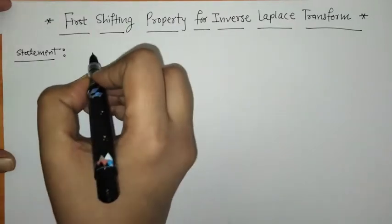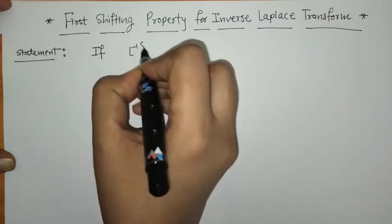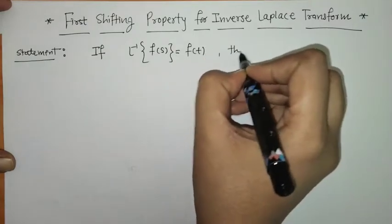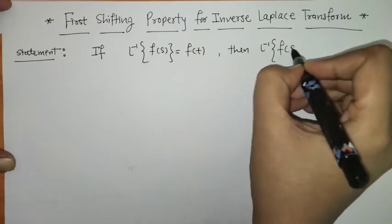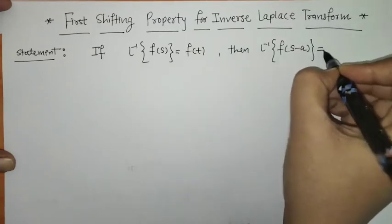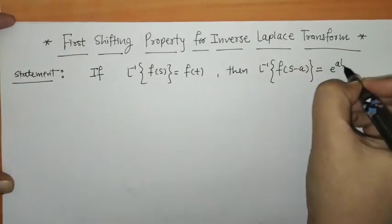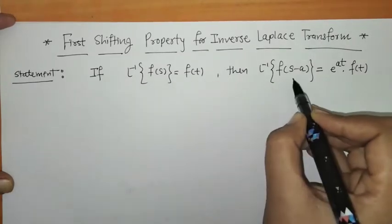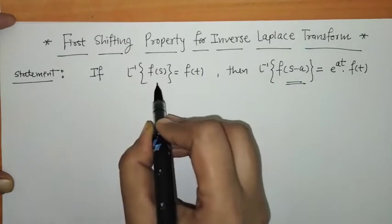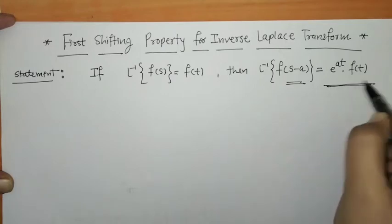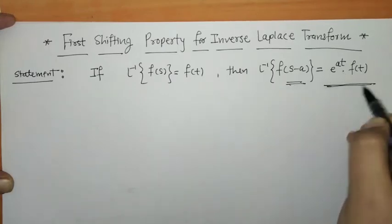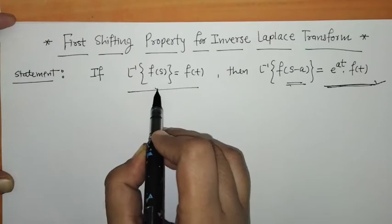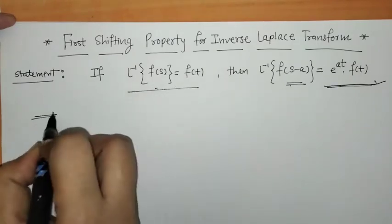First we write down the statement: if L⁻¹{F(s)} = f(t), then L⁻¹{F(s-a)} is given by e^(at) · f(t). When we shift s to s-a in F(s), the inverse Laplace transform is given by e^(at) · f(t), where f(t) is the inverse Laplace of F(s). Now we have to prove this statement.